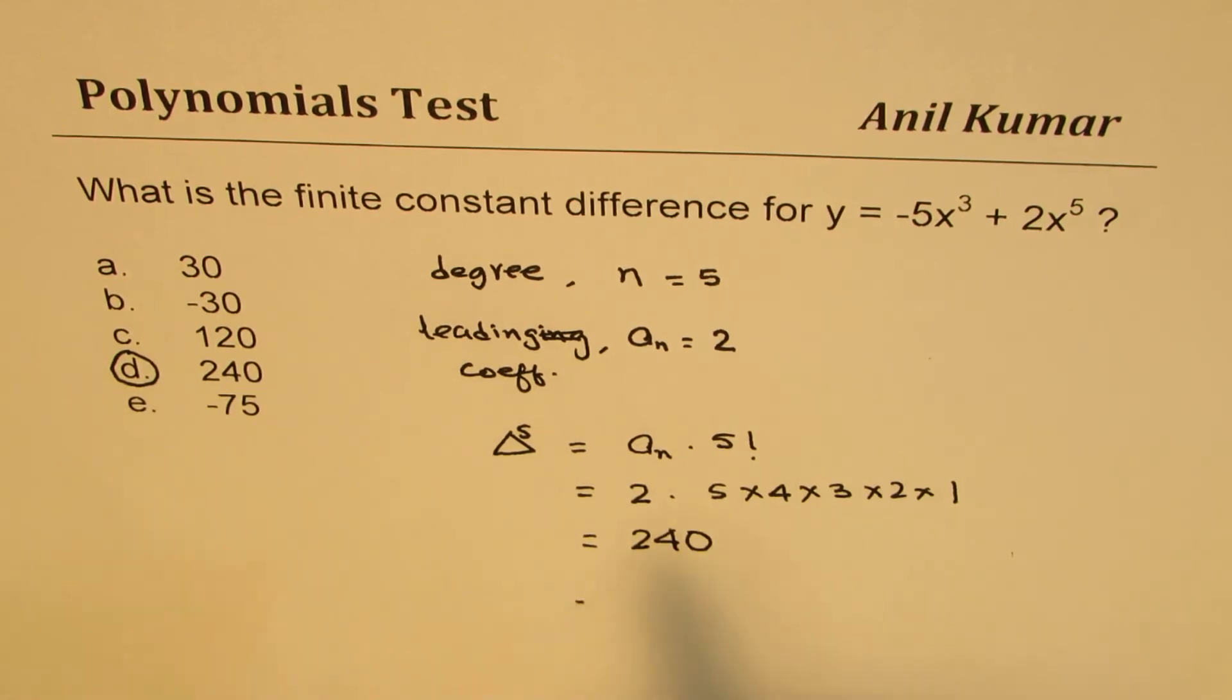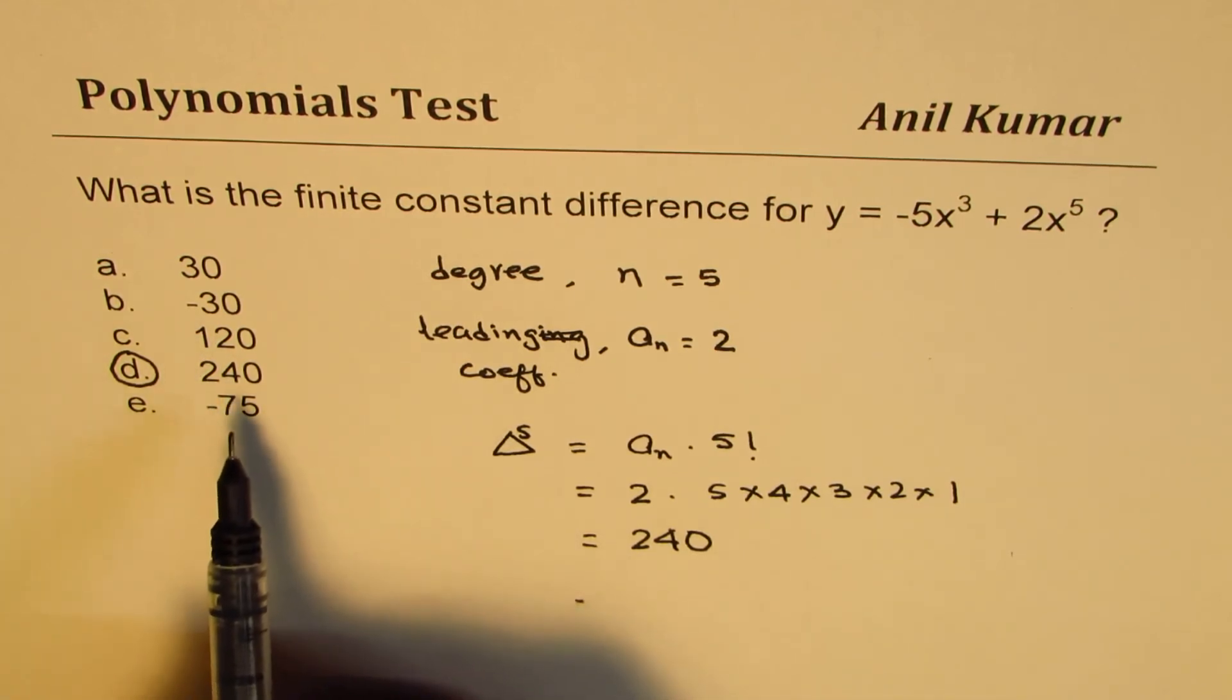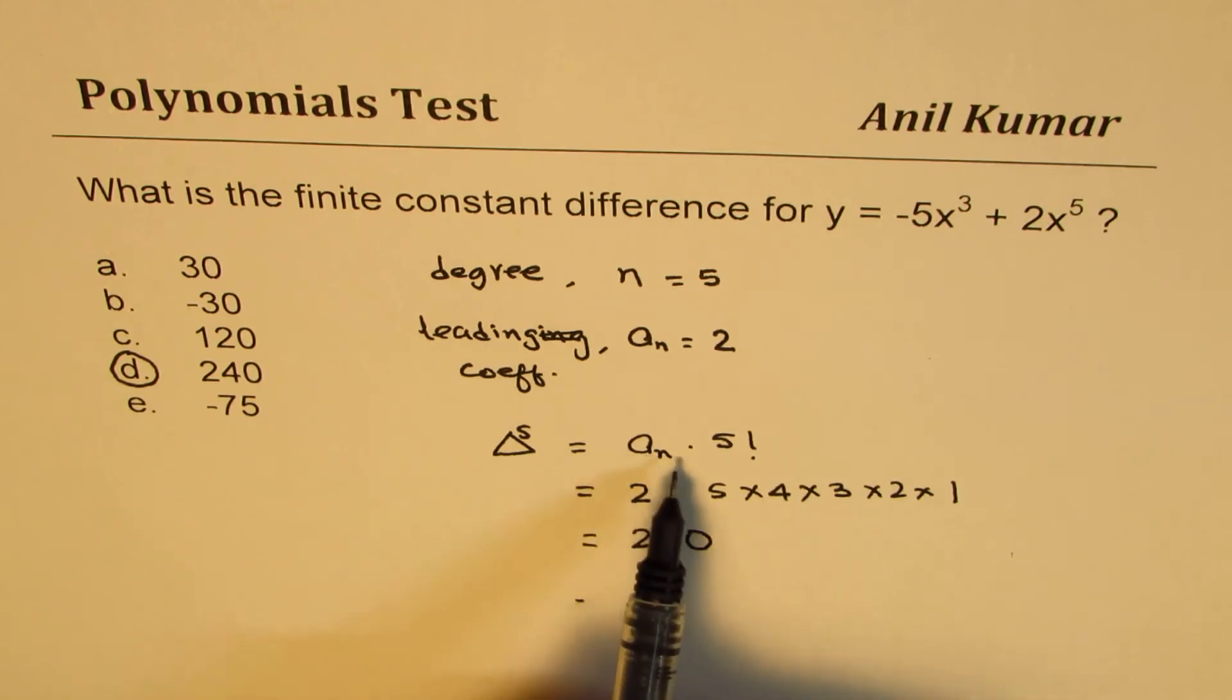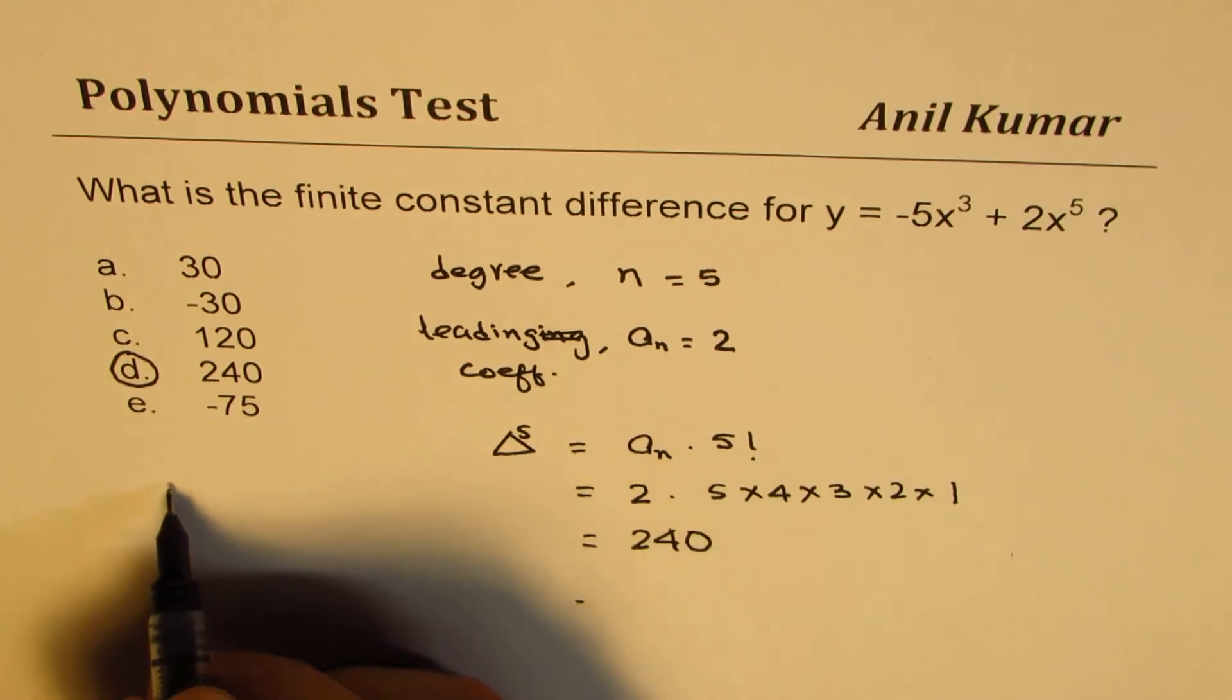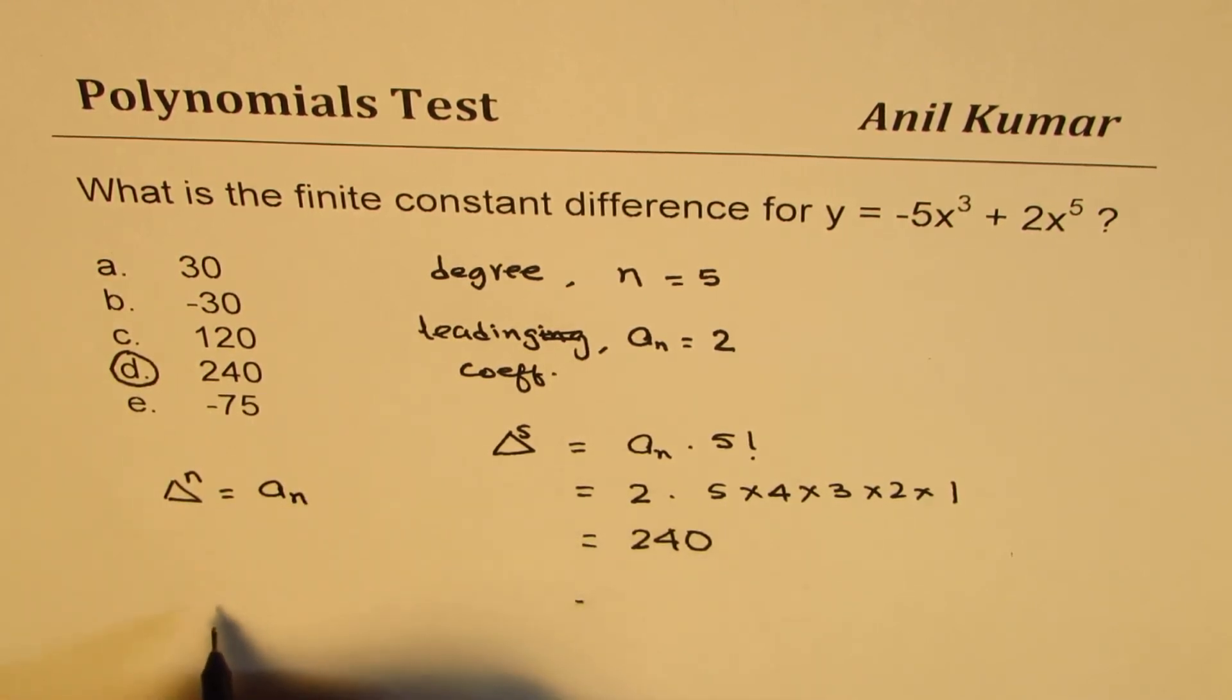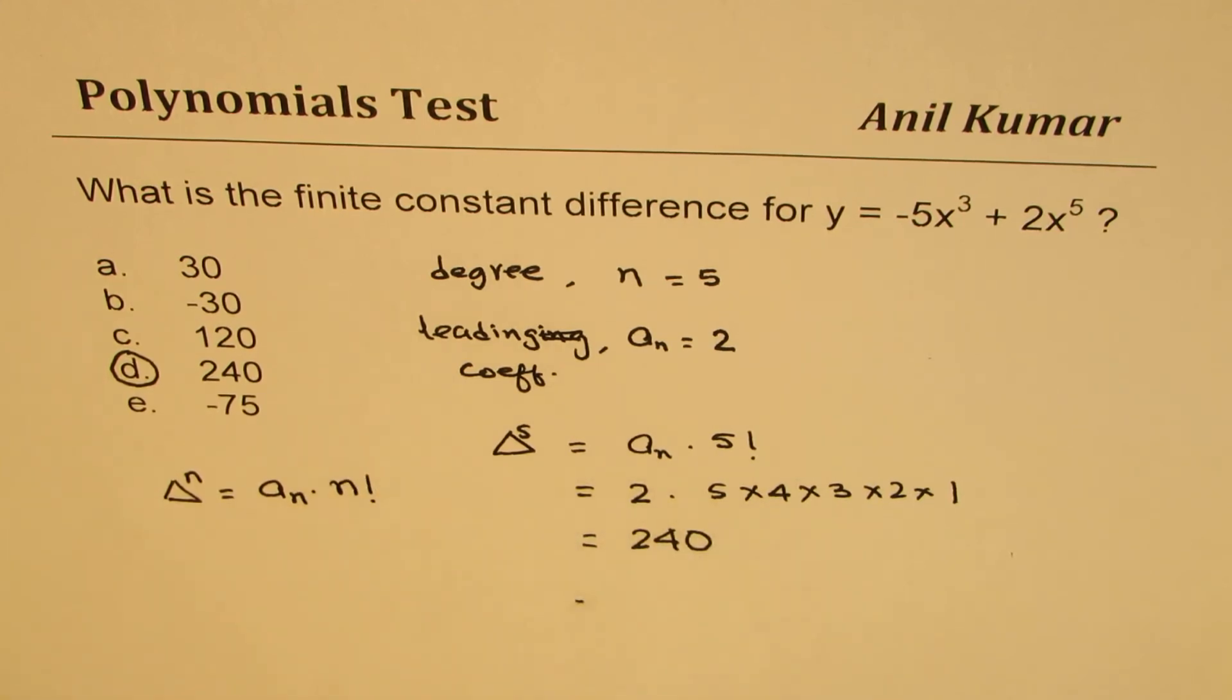Right, so remember this: the finite constant difference is related with the leading coefficient and the degree, and the formula is the nth finite difference is equal to the product of leading coefficient times n factorial. That is the most important formula which you should know when doing questions on polynomials.